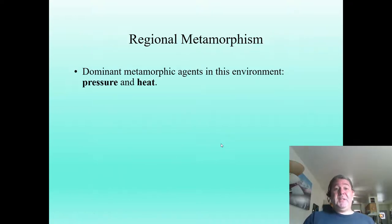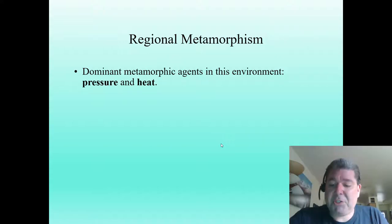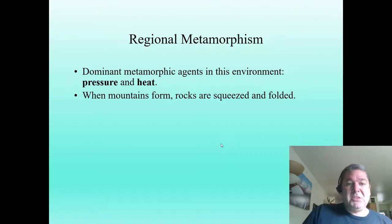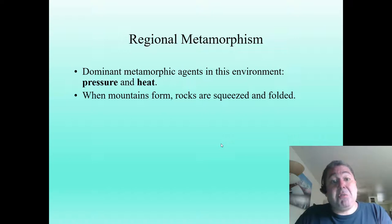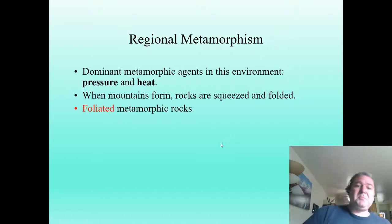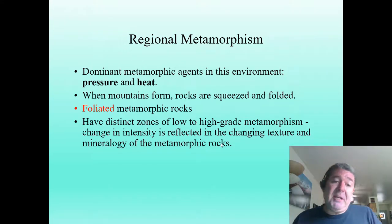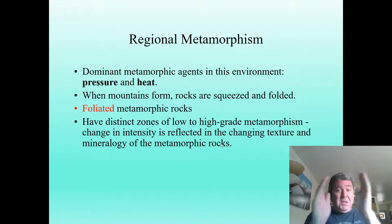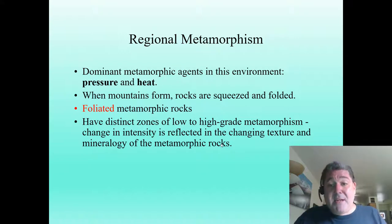Now let's look at regional metamorphism. The dominant metamorphic agents in this environment are pressure and heat, with heat always being most important. When mountains form, rocks are folded and squeezed — we get compression at a convergent margin, like a continental-continental convergent margin forming mountains like the Himalayas. This creates foliated metamorphic rocks responding to that differential stress. Foliated metamorphic rocks have distinct zones from low to high grades of metamorphism, reflected in how minerals are lined up and how the texture looks.